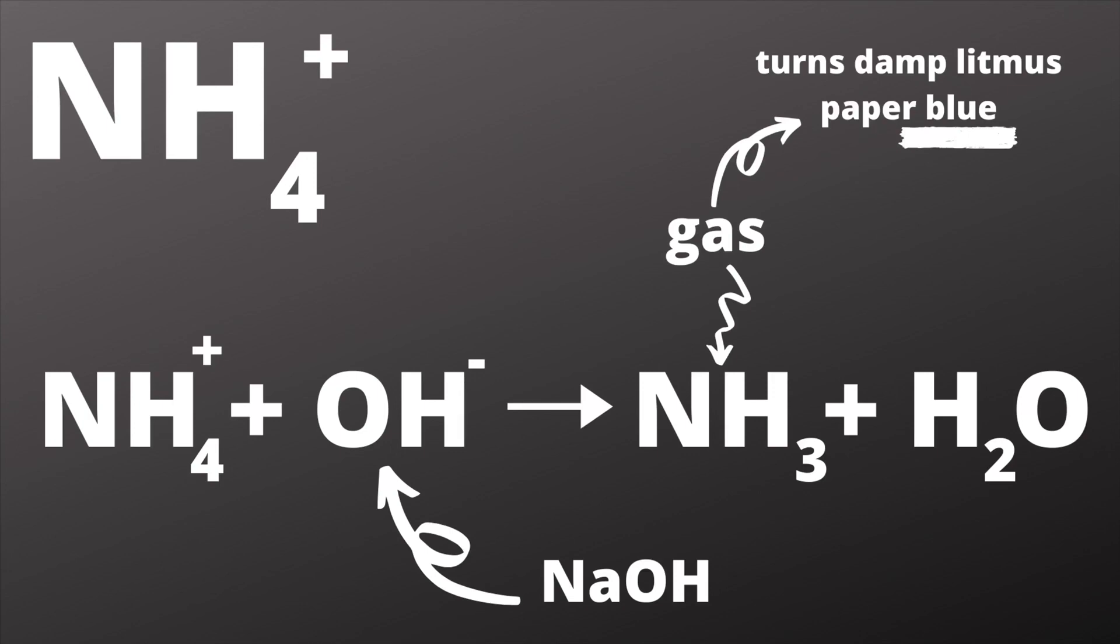Now if we were testing a sample for ammonium ions and they were present, when we heat our sample gently in a test tube with a little sodium hydroxide, then some ammonia gas will get kicked out. Now ammonia gas is actually colourless, and so to test for this safely,